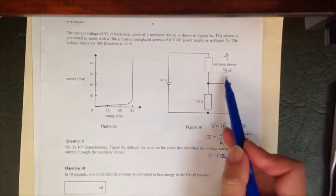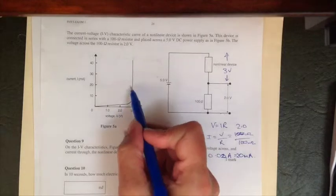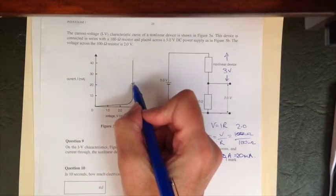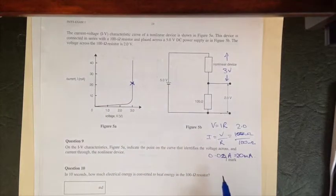So we know we've got 3 volts across the nonlinear device and we know we've got 20 milliamps through it. So we're at 3 volts, 20 milliamps, and we can see that that works out very nicely and it sits very perfectly on our graph.